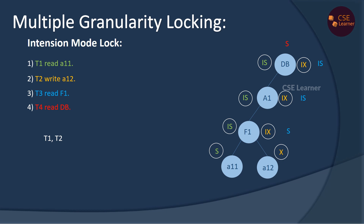So you have to share the A11 attributes, and that's why the parents will have an Intention Shared lock. You also have to write the A12 attributes. Here are the conflicts: it is read and write on different data items. This is shared exclusive — it is a conflict. This is shared and intention exclusive — this is the third lock. If a parent is shared and a child is exclusive, this is shared and intention exclusive.